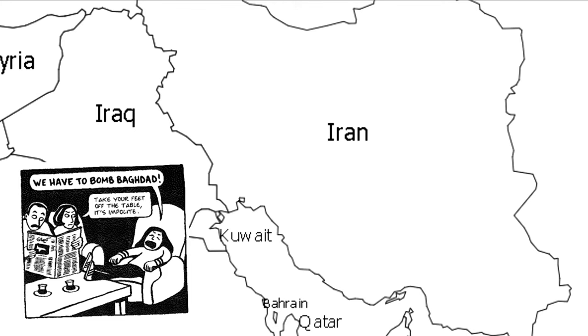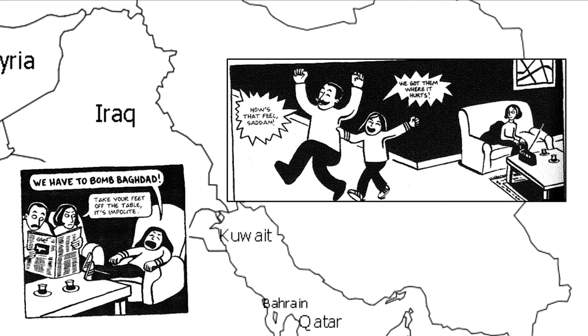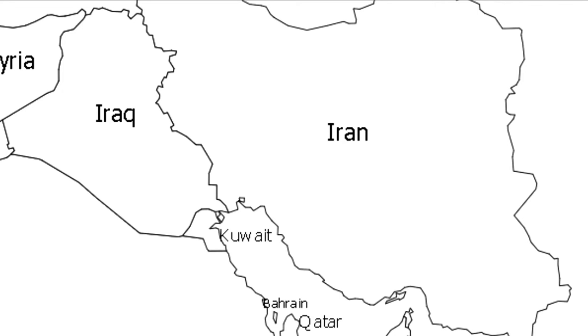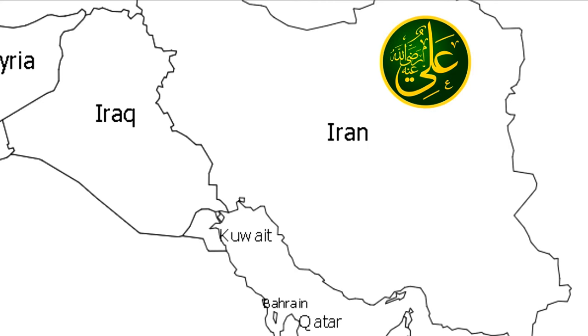Marjan herself points out the immediate sense of patriotism she has once the bombs begin to drop. Similarly, her father, a staunch critic of the regime, shows his support for each new victory given the very real possibility of their family being killed in the crossfire. This war, which lasted nearly a decade, was fuelled by disputes over the two countries' shared border, as well as attempts to provoke respective Muslim groups in each country. Over 90% of Iran's citizenship are considered Shia Muslim, whereas Iraq's dominant faith is that of Sunni.